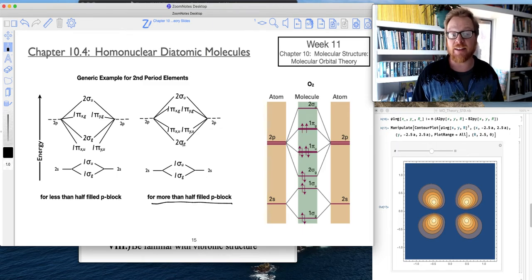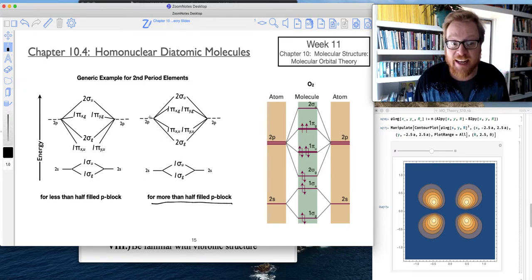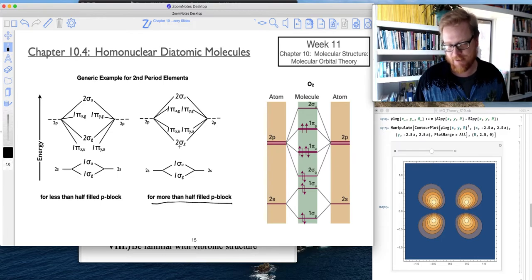So when the p-block is, really I should say half-filled or more, the 2sg ends up being the lowest energy. Remember that 2sg is created from linear combinations of 2pz, and so here I've got the 2sg way down here, and as it turns out the 2sgu is the highest energy up here.